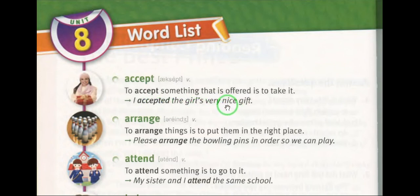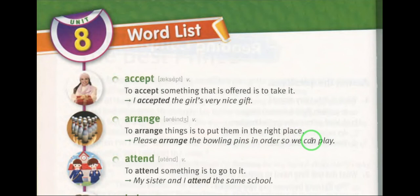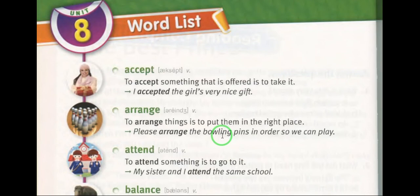Word two: arrange (verb) — manazmawal, tartibawal, ya katarawal. For example: please arrange the bowling pins in order so we can play. Arrange marabani, tartib kray. The bowling pins — the bowling lobe debi — in order so we can play. Bowling yawdawal lobada tosta.